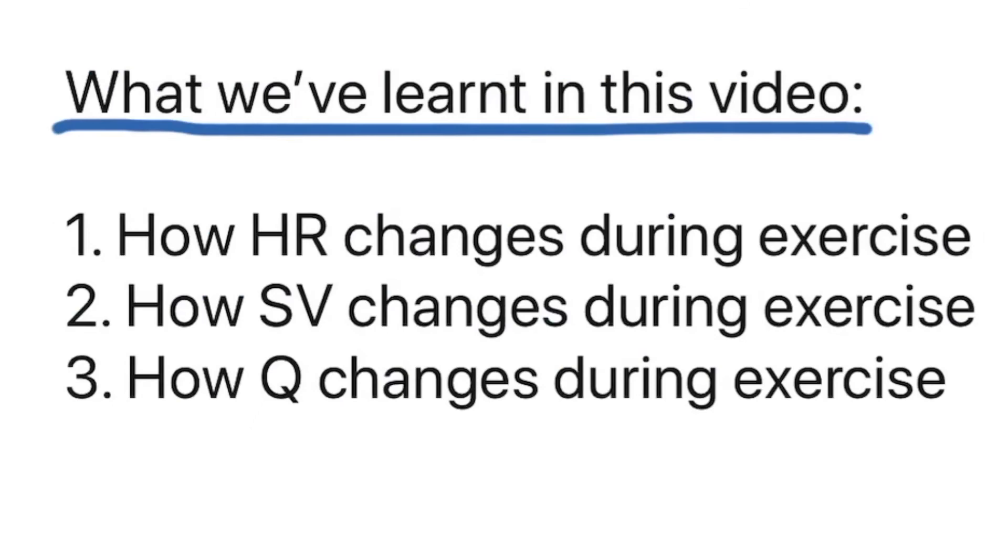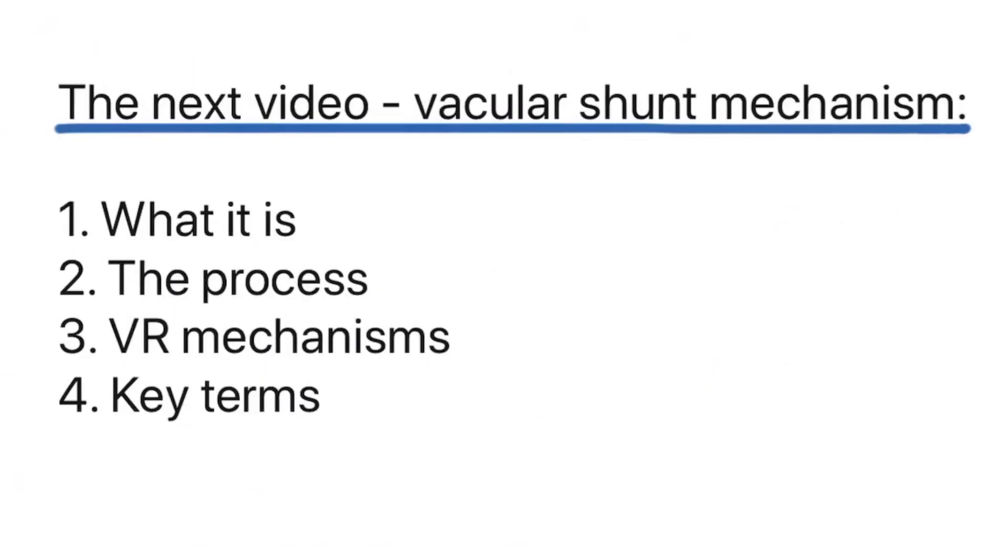Thank you everyone for watching. I will just recap quickly what we have learned in today's video. We have learned how heart rate changes during exercise, how stroke volume has changed during exercise, and how cardiac output has changed during exercise. In the next video, what we are going to look at is the vascular shunt mechanism. And the main areas of this is what actually is vascular shunt mechanism, the process of vascular shunt mechanism or the physiology of it, the venous return mechanisms and physiology, and just a bunch of key terms which you have to get familiar with.